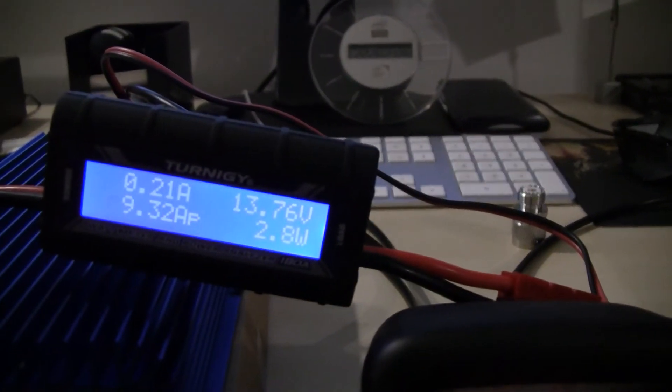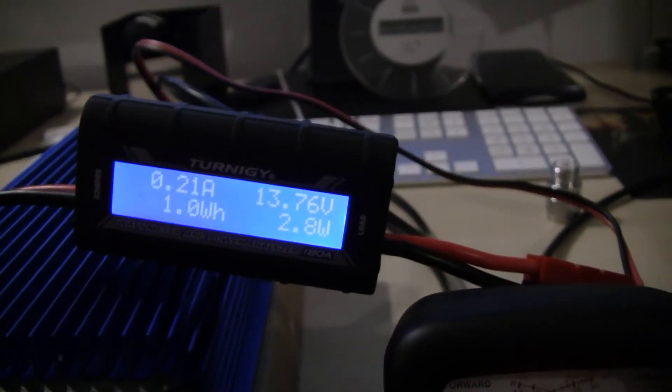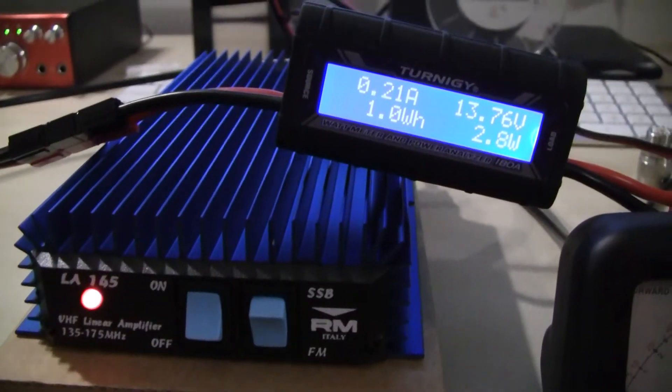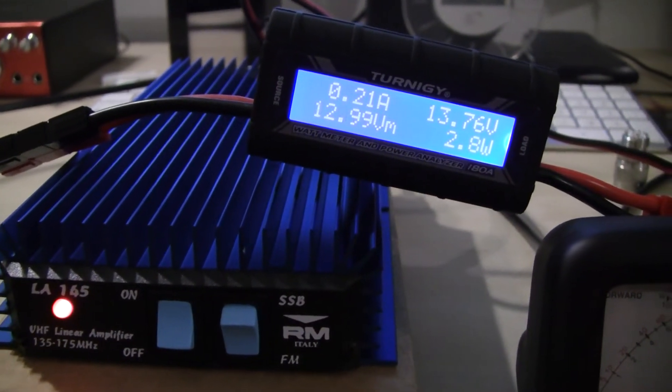Now I'll turn on the amplifier. We have a little spike in current, now 210 mA. And again, we will key up now on the same setting.